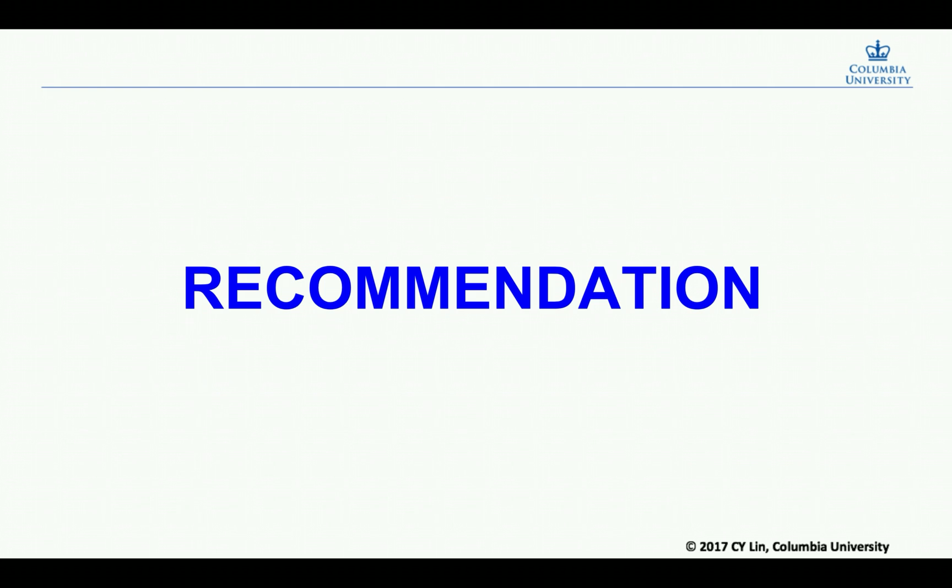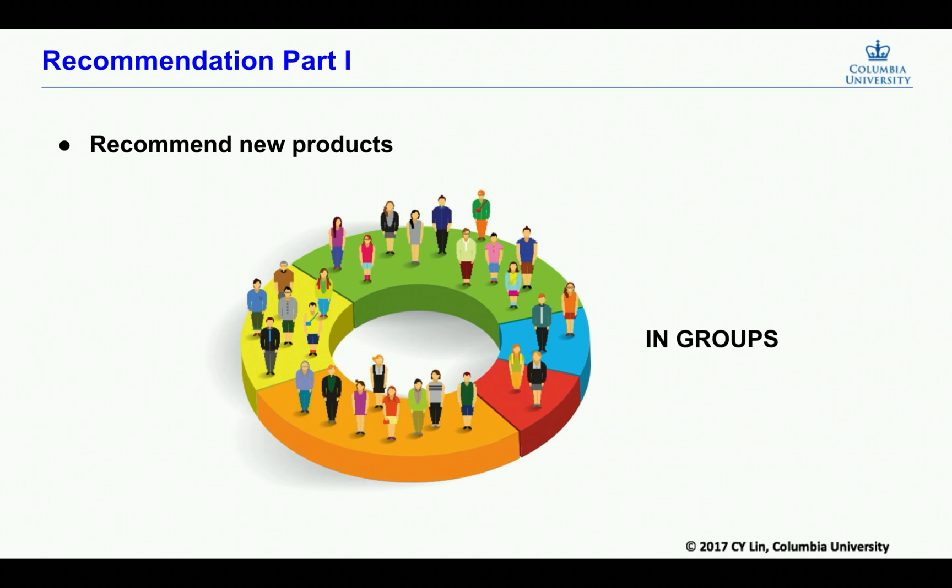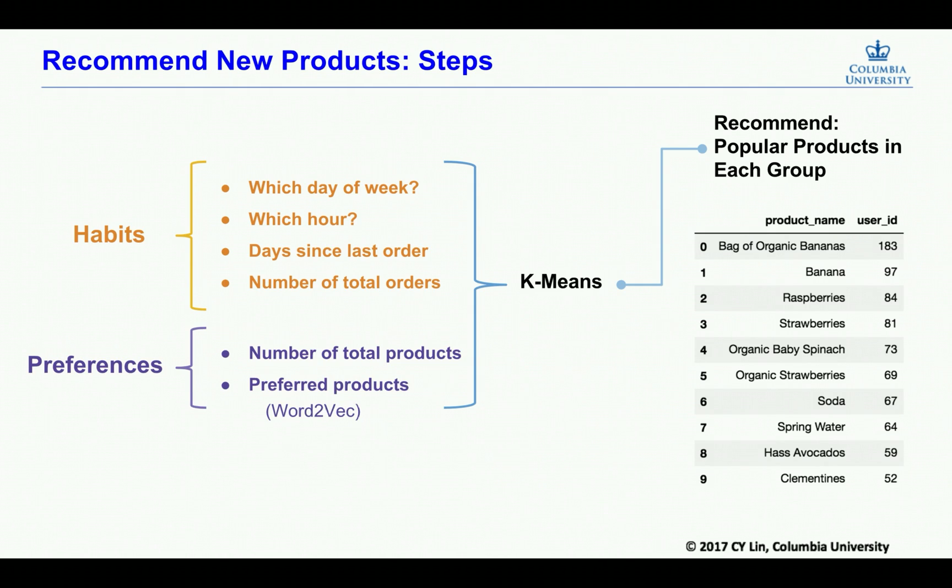Now, let's start with the product recommendation part. The first thing we want to do is to recommend new products to customers. Our main idea is to first group the customers based on similarities and we recommend at the group level. To do this, we need to extract some features from user habits and preferences. And then we use k-means to train all these features. And after we do the clustering, we will recommend the most popular products in each group.